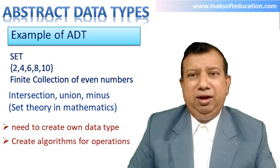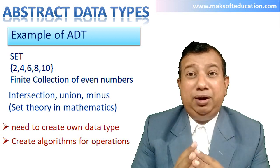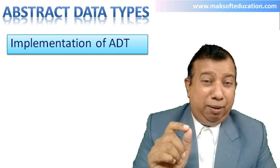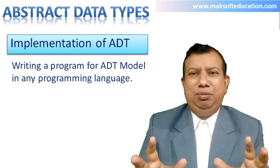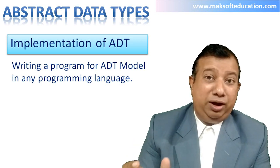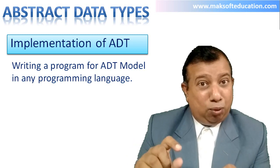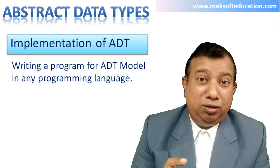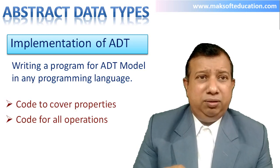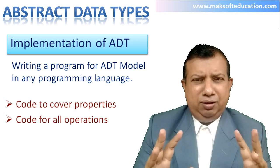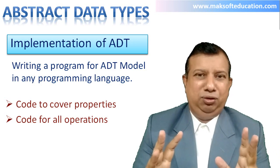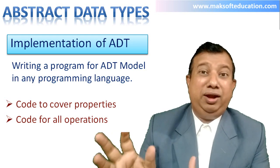Now let us understand the implementation of ADT. When we say ADT is just a model, writing a program for that ADT model is known as implementation. You can use any programming language, but whatever model you have decided for the ADT, you have to write a program for it. We have to write code for the properties of data and also write algorithms or code for the different possible operations.